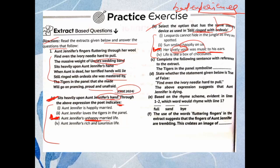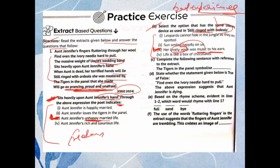Part C: Complete the following sentence with reference to the extract — 'The tigers in the panel symbolize...' Looking at the last lines, the tigers 'go on prancing, proud and unafraid.' These three words — prancing (move freely), proud, and unafraid — tell us the tigers symbolize freedom and fearlessness.